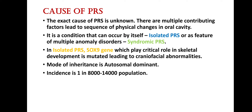Causes of Pierre Robin syndrome: the exact causes are not fully known, and there are multiple contributing factors leading to the sequence of physical changes in the oral cavity. It can occur by itself, known as isolated Pierre Robin syndrome, or as a feature of multiple anomaly disorders, known as syndromic Pierre Robin syndrome. In isolated Pierre Robin syndrome, the SOX9 gene, which plays a critical role in skeletal development, is mutated, leading to craniofacial abnormalities. The mode of inheritance is autosomal dominant, with an incidence of 1 in 8,000 to 14,000 population.